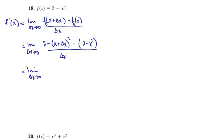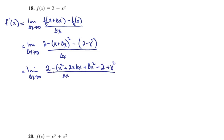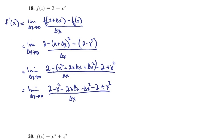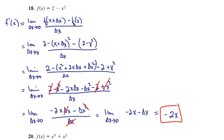Limit as delta x approaches 0. We expand out x plus delta x squared, keeping it in parentheses because of the negative sign on the outside. So we have 2 minus x squared plus 2x delta x plus delta x squared, then minus 2 plus x squared, all over delta x. Applying the negative to all terms inside, anything without a delta x disappears: negative 2 and positive 2, negative x squared and positive x squared. That leaves the limit as delta x approaches 0 of negative 2x delta x minus delta x squared over delta x. Canceling delta x, the end result is negative 2x.